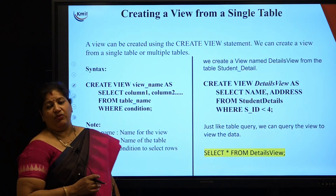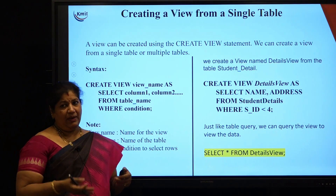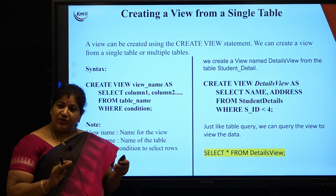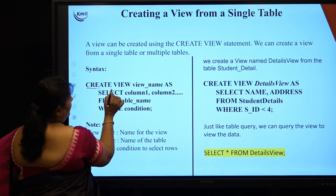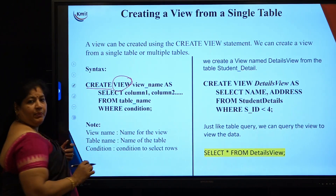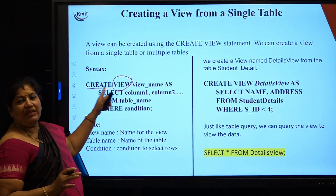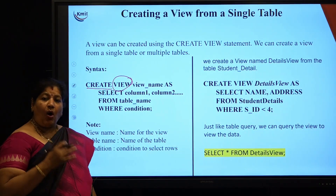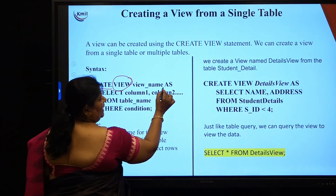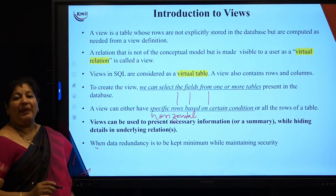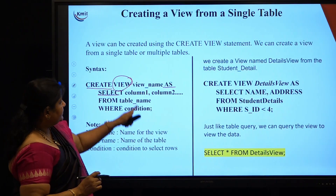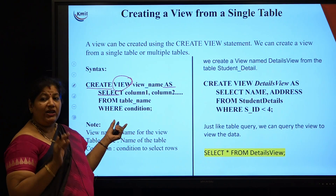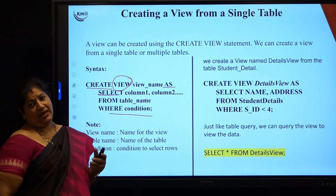How do we create views? Views can be created from a single table or from multiple tables. CREATE is a DDL or Data Definition Language command. So the syntax is: CREATE VIEW, then the view name. We create it by selecting few columns and rows from an existing table using SELECT. Specify the column names you want, from which table, and if you want horizontal partition, use a WHERE condition.